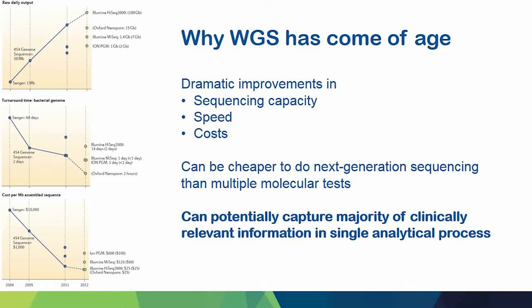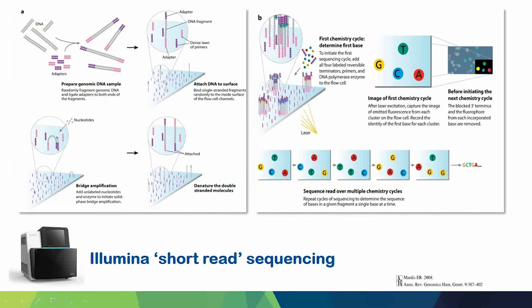The real potential of whole genome sequencing is that you can capture a whole load of clinically relevant information in a single analytical process — not only species identification, but all your resistance genes, strain typing, virulence factors, pretty much anything you might want to find within that genome. The real sort of leader in this field is Illumina, which is a very stable and well-established platform. Essentially, you smash the DNA up into millions of tiny fragments, attach adapters, amplify the amount of DNA on a flow cell, and reconstruct the sequence using fluorescent nucleotides.